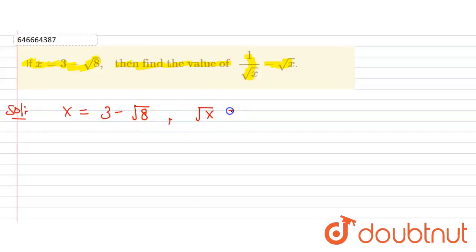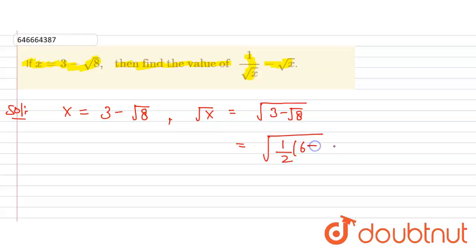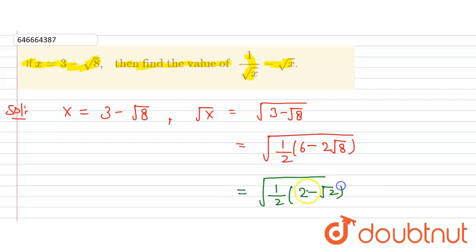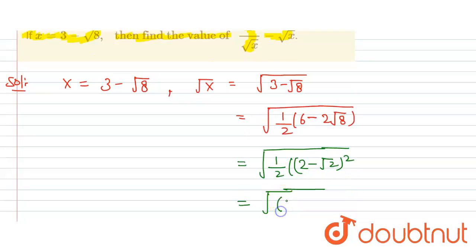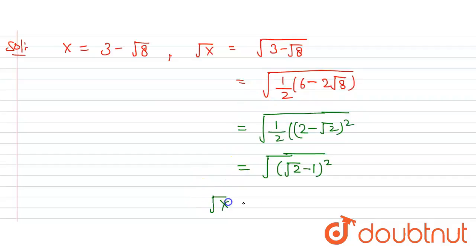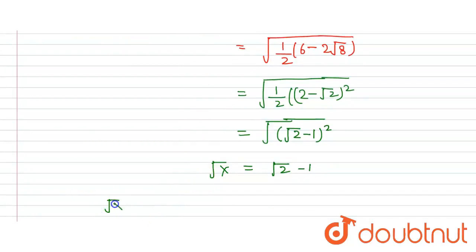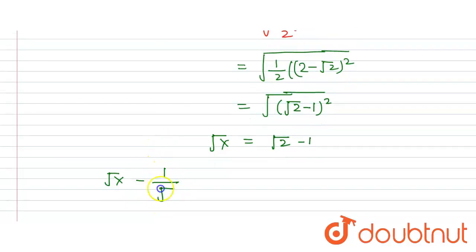From here we can write under root of x that is equal to under root of (3 minus under root of 8). This may be written as under root of (1/2) times (6 minus 2 under root of 8), which may be written as under root of (1/2) times (under root 2 minus 1) whole square, giving us under root of x equal to under root 2 minus 1.